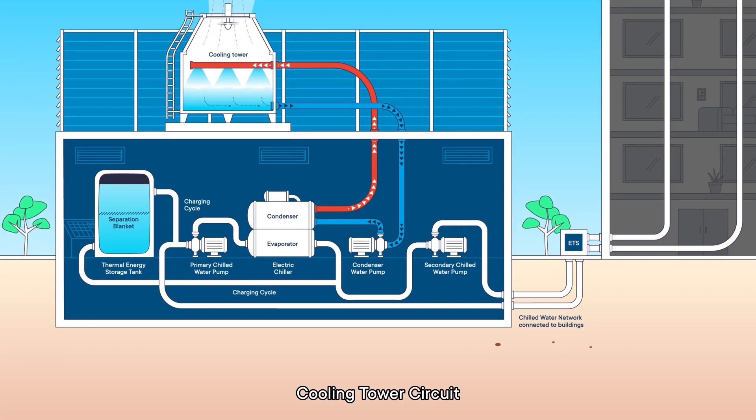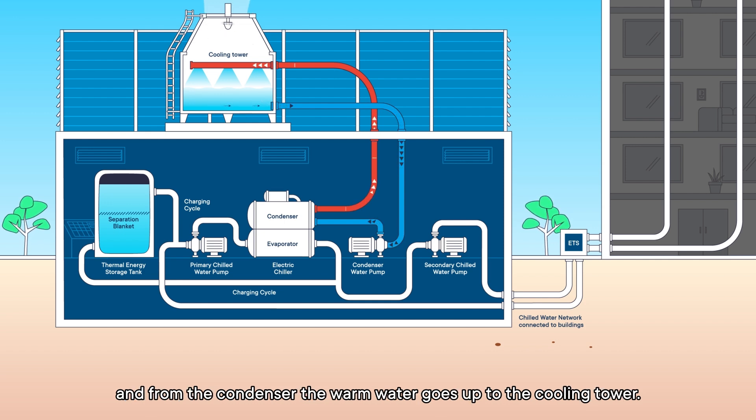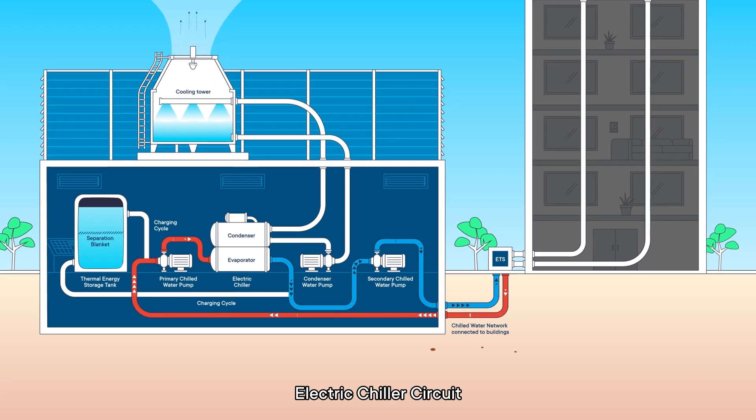Cooling tower circuit: First, the circuit focuses on the cooling tower to the chiller. Supply of chilled water goes from the cooling tower to the condenser, and from the condenser the warm water goes up to the cooling tower.